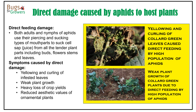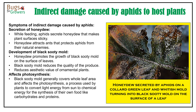In case of direct feeding damage, aphids use their piercing and sucking types of mouth parts to suck juice from tender plant parts, and that in turn can cause symptoms like curling of leaves, stunted plant growth, reduction in plant vigor, and aesthetic values of many ornamental plants.